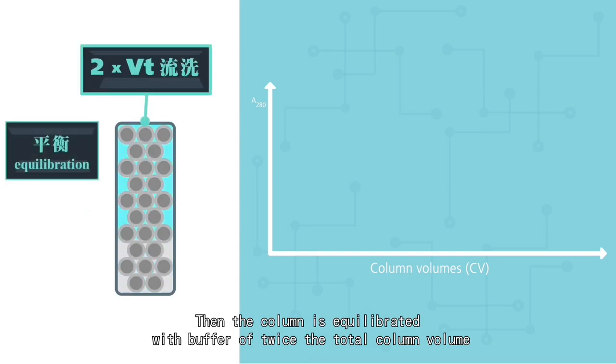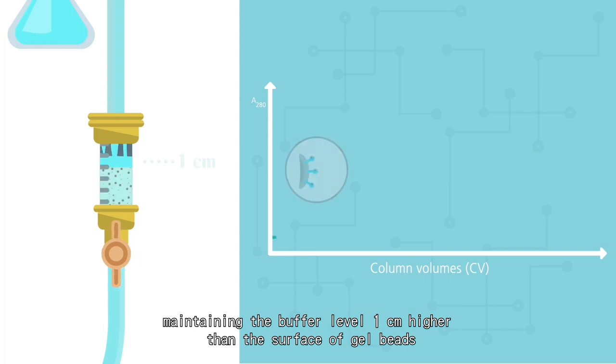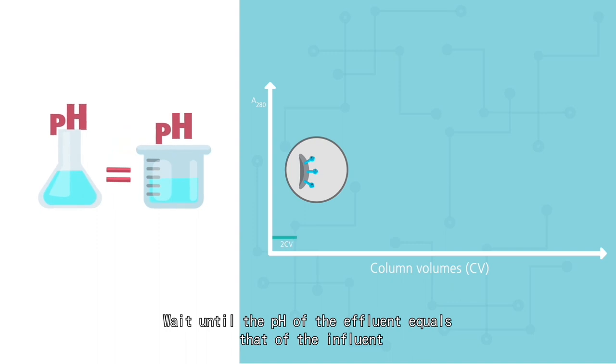Then the column is equilibrated with buffer of twice the total column volume, maintaining the buffer level 1 cm higher than the surface of gel beads. Wait until the pH of the effluent equals that of the influent, which means the column has reached equilibrium.